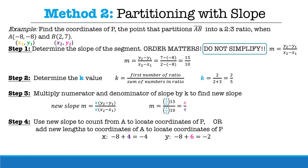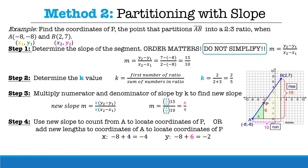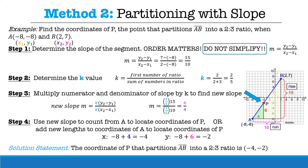You can then count the new slope from point A on the graph, or add the results to x1 and y1. Here x1 is negative eight, so negative eight plus four equals negative four. Our y1 is also negative eight, so negative eight plus six equals negative two. Therefore, the coordinate of P that partitions AB in a two to three ratio is negative four, negative two.